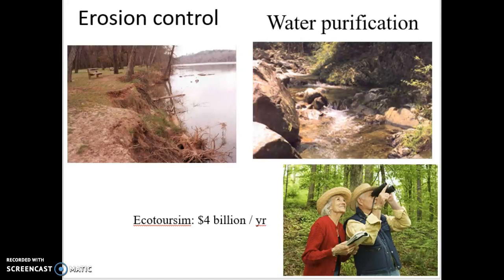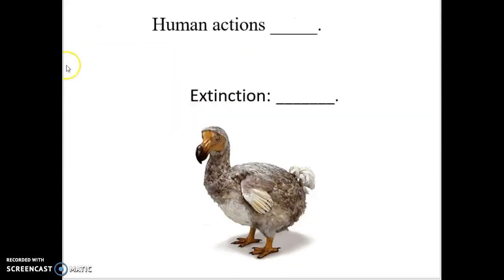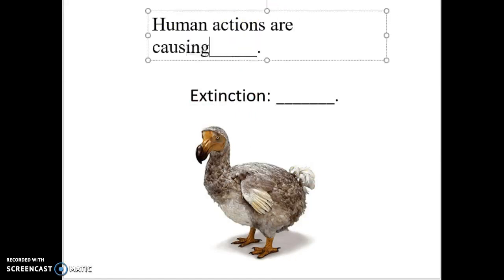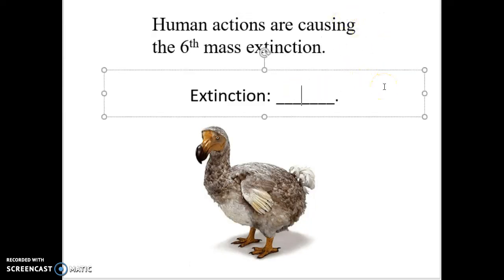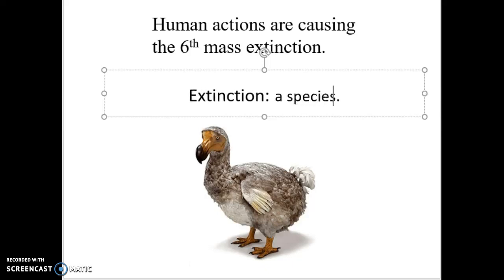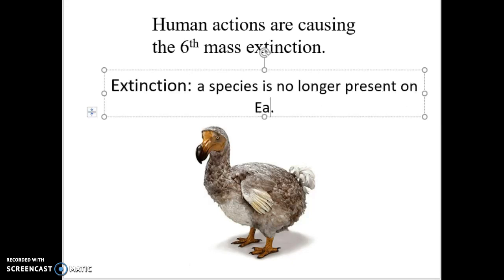We want to look at this extinction issue and see what's happening. Human actions are causing the sixth mass extinction. We are moving down a very bad path with the number of species going extinct — 10 to 20 percent will go extinct in the next 20 to 30 years. Species have gone extinct naturally over Earth's history; we've had five mass extinctions — meteor impacts, climate changes, the tilt of Earth's axis. But the sixth one we're in is because of us. This is a human-driven mass extinction, and it's not a good thing.